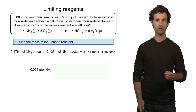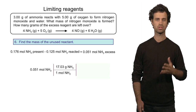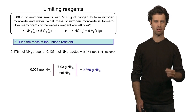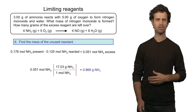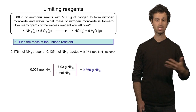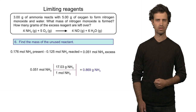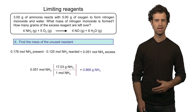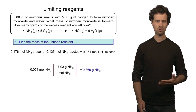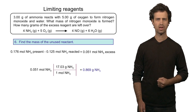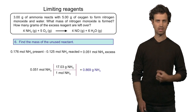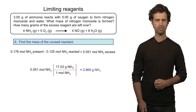The 0.051 moles times the molar mass of ammonia gives a total of 0.869 grams of ammonia left after the reaction. So we see that knowing the limiting reagent allows us to calculate two things: the amount of products formed and the amount of excess reagent left after the reaction.